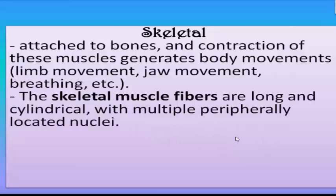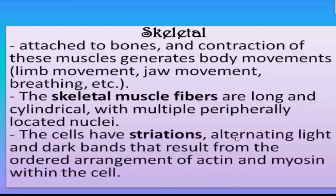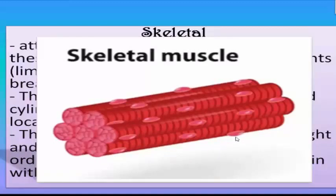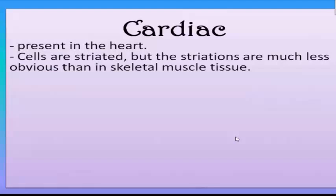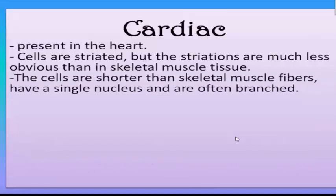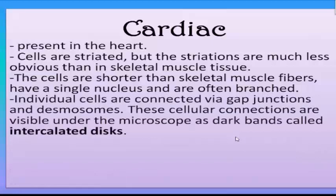Skeletal muscle fibers are long and cylindrical, with multiple peripherally located nuclei. The cells have striations — alternating light and dark bands that result from the ordered arrangement of actin and myosin within the cells. Next is cardiac muscle, present in the heart. Cells are striated, but the striations are much less obvious than in skeletal muscle tissue. The cells are shorter than skeletal muscle fibers and have a single nucleus and branched ends.